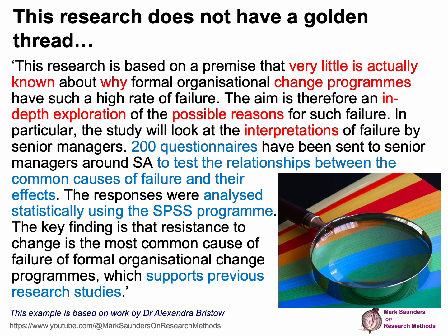Now let's see why there is a problem here with the golden thread — a problem with methodological fit. I've highlighted different parts in two colours: red and blue. The red part highlights that very little is actually known about why change programmes have such a high rate of failure, and it highlights doing an in-depth exploration of the reasons and looking at interpretations. Those ideas suggest certain philosophies, certain approaches to reasoning, and certain forms of methodological choice in terms of quantitative, qualitative, or mixed data. The blue part talks about how it's actually going to be undertaken: 200 questionnaires, testing relationships, and analysing statistically using SPSS. This suggests a very particular method — and the question is whether that method actually matches what's being said in the first part. That's what we need to ask when we think about methodological fit.